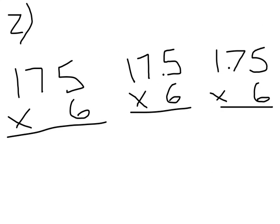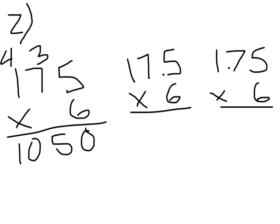Now let's do another example. What's 175 times 6? Well, 6 times 5 is 30, 6 times 7 is 42, plus 3 more is 45. 6 times 1 is 6, plus 4 more is 10. So 175 times 6 is 1,050.